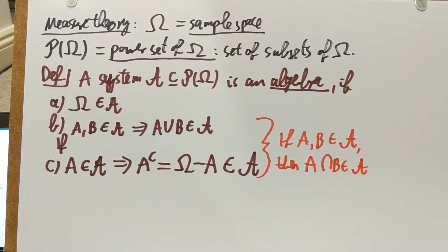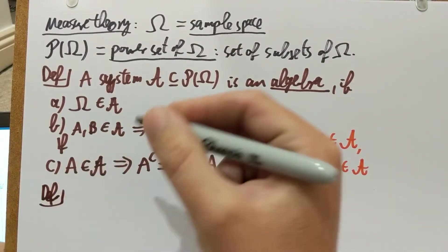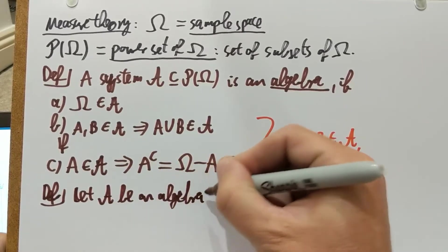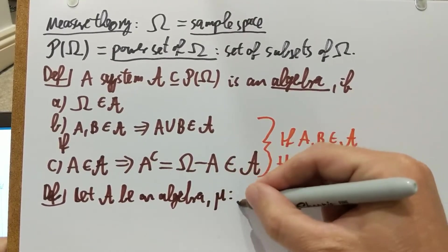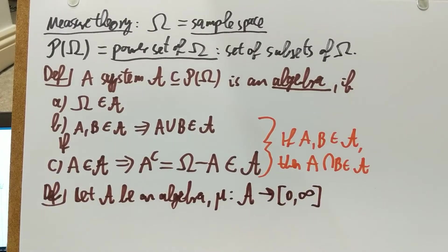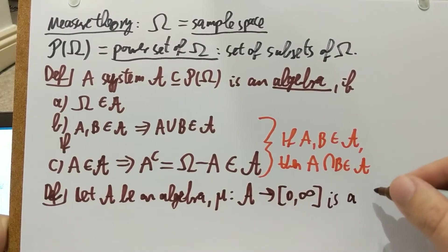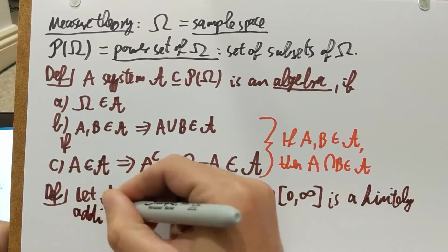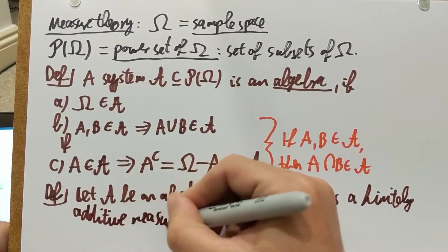So that was the definition of an algebra. Now I'm going to tell you about finitely additive measures, which are not yet proper measures. So let script A be an algebra as in the previous part, and let a function mu go from A to the real interval zero to infinity — notice that infinity is actually included, so it's a real interval extended with the number infinity. This function is a finitely additive measure on the algebra A.